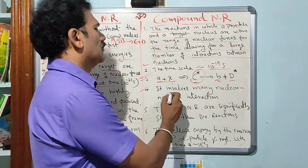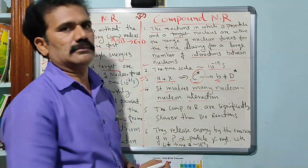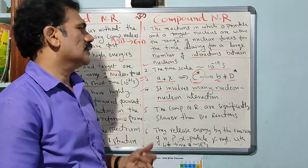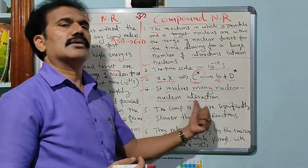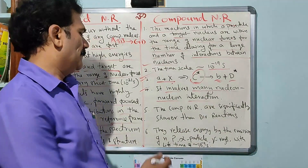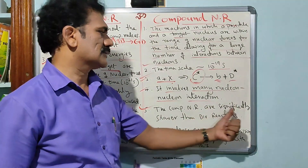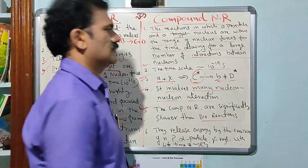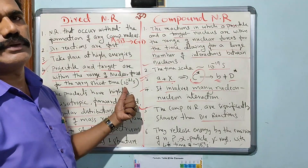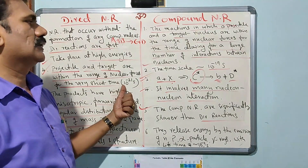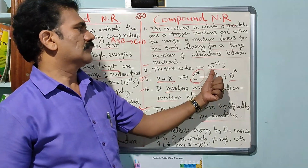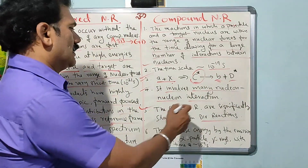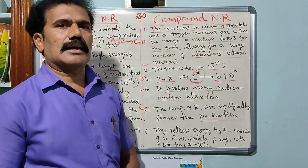This compound nuclear reaction involves many nucleon-nucleon interactions — it is not just a one-to-one nuclear interaction, but many nucleon-nucleon interactions. Compound nuclear reactions are significantly slower than direct reactions. As mentioned, direct reactions take nearly 10 to the power of minus 21 seconds, whereas compound nuclear reactions occur in the range of 10 to the power of minus 19 seconds, making them significantly slower.